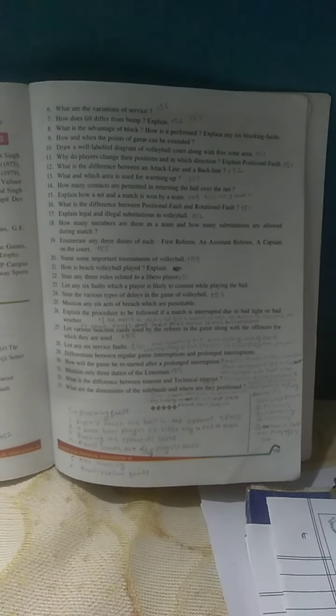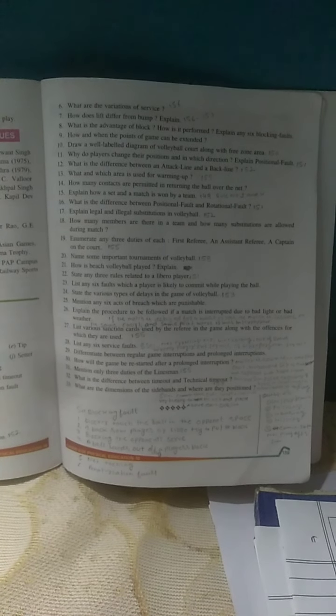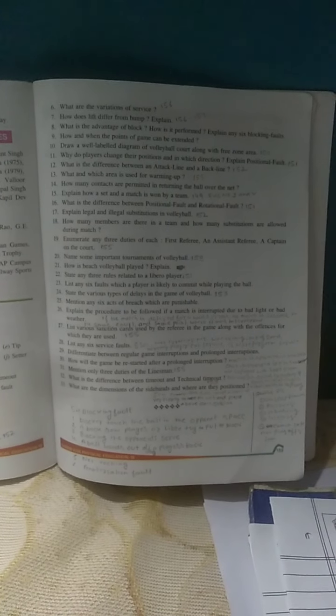And question number 18, how many members are there in the team and how many substitutions are allowed during the match? So your answer will be like this. There are 12 members in a team, 6 are playing and 6 are extra. The 6 players can be substituted. Dear students, rest questions we will cover in my next video. Thank you for watching.